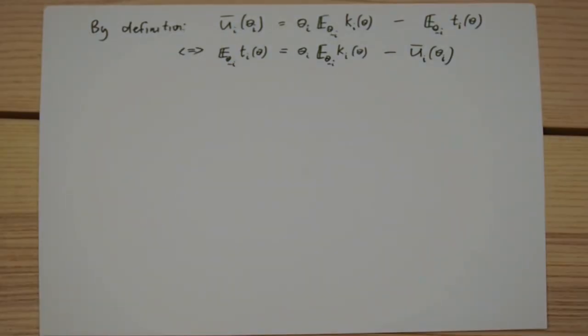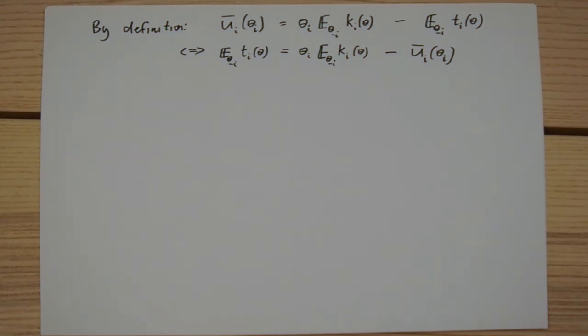Since we already know that the expected utility of any type of player i is higher in mechanism gamma prime than it is in the generalized VCG mechanism, and the two mechanisms have the same allocation rule,